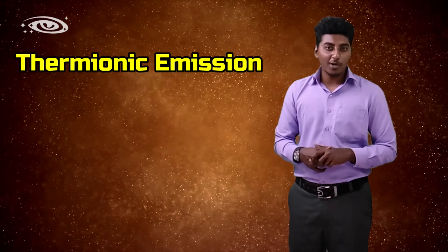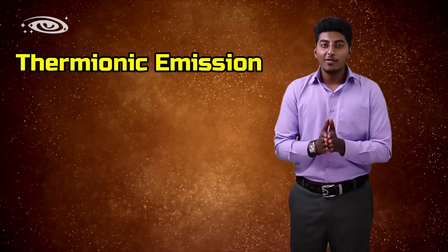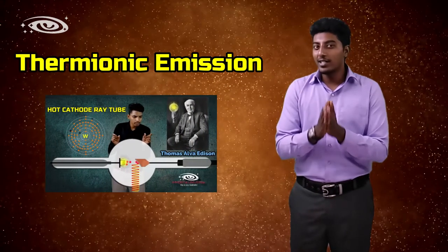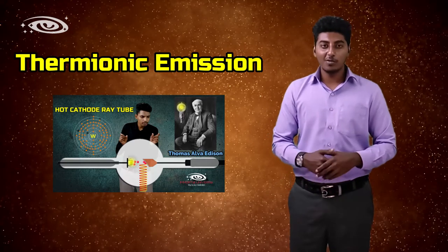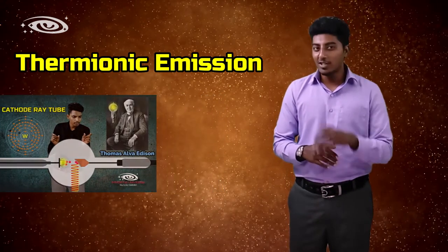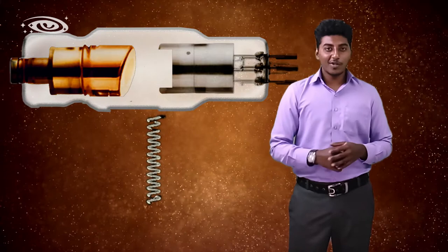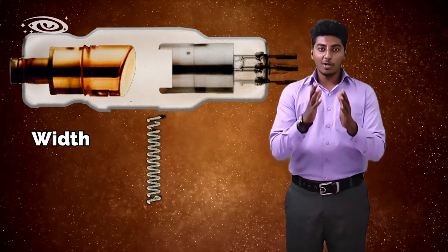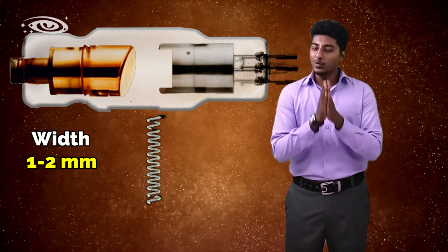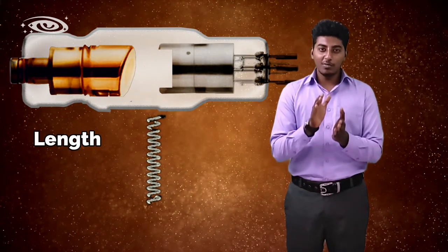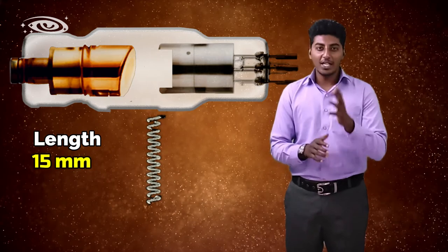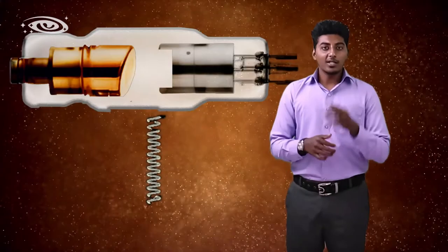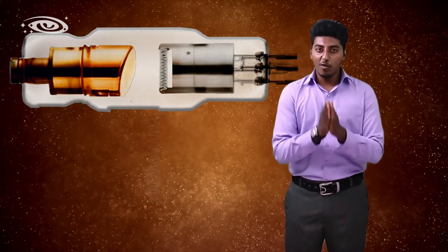If you want to know the thermionic emission principle in detail, we have done a video for that with a link in the description box. You can check it out after this video. The thickness of the filament wire is 0.1 to 0.2 millimeter, the width of the coil is 1 to 2 millimeter, and the length is 15 millimeter. This filament is fixed inside the focusing cup.